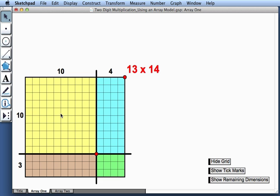We have 10 by 10, which is 100, 10 by 4, which is 40, 3 by 10, which is 30, and 3 by 4, which is 12.